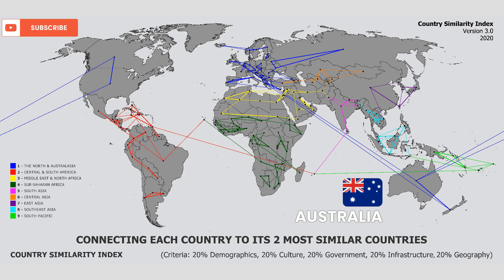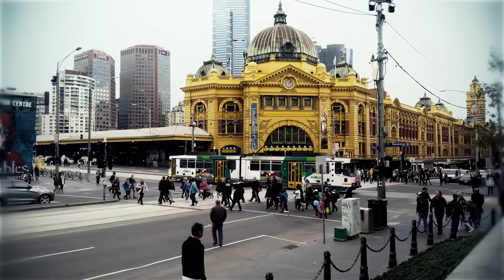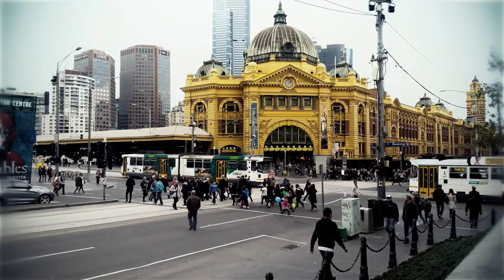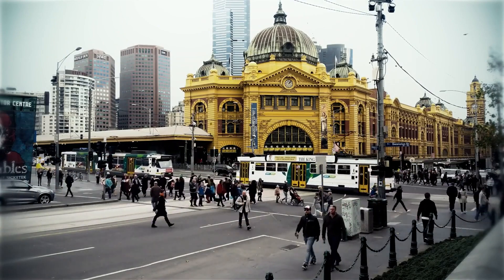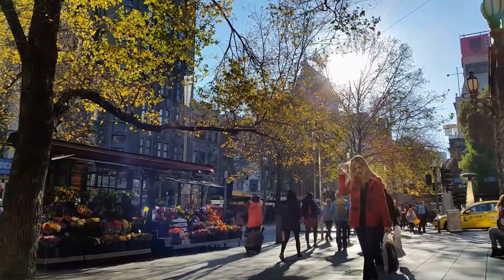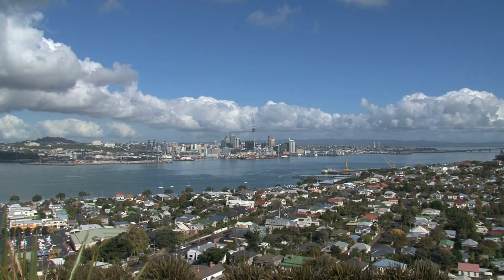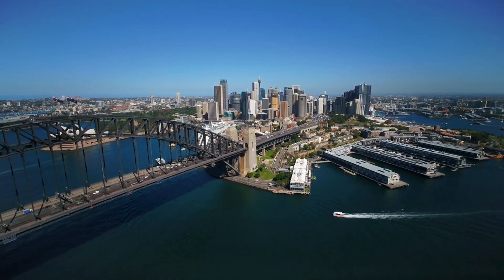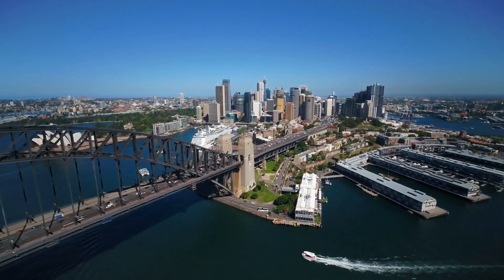Australia is another fascinating case, connecting to both North America and Europe, despite being located in the Southern Hemisphere. As a former British colony, Australia shares strong cultural and political ties with the United Kingdom. It is also similar to other English-speaking countries with many European immigrants, like the United States and Canada. New Zealand is the only country in its geographic area with similar characteristics. Many of the other countries in close proximity to Australia, like Indonesia and Papua New Guinea, are far different.